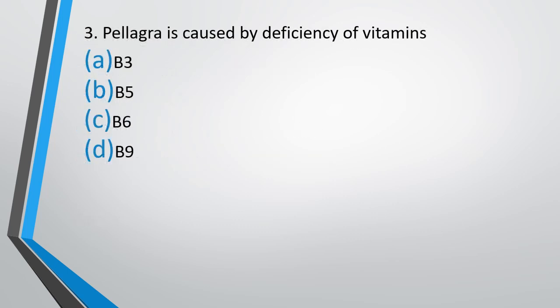Question number 3. Pellagra is caused by deficiency of Vitamin B3, B5, B6, or B9. The correct answer is Vitamin B3 — also known as Niacin. Remember the names of vitamins and their deficiency diseases as they are often asked in NEET.